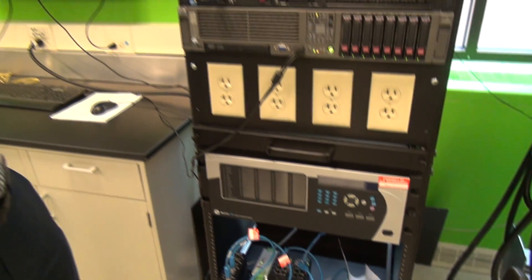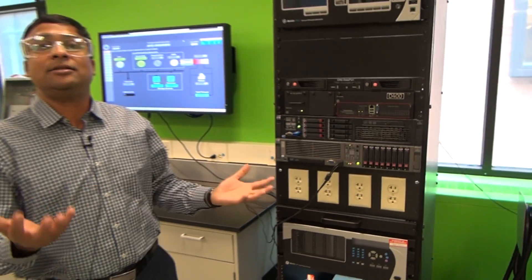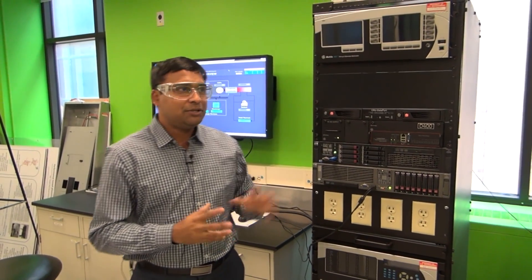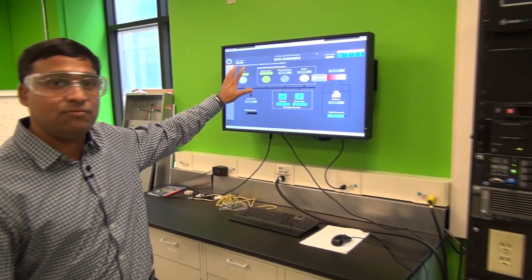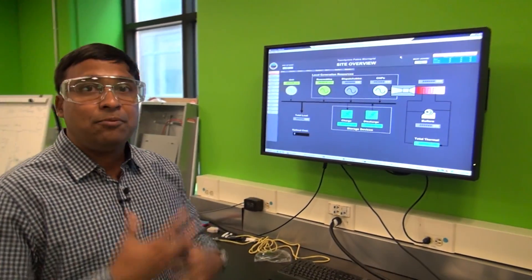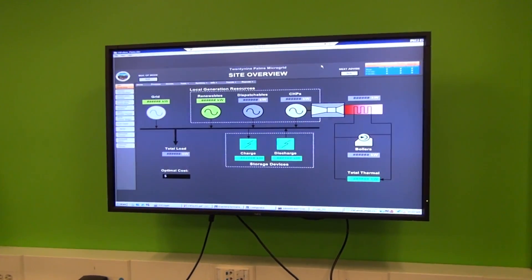So together, a control system that you see like this, we call it an enhanced microgrid control system, which when coupled with a human machine interface like this that an operator can operate, can provide resiliency and efficiency functions for the grid.